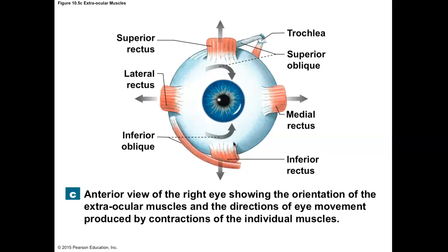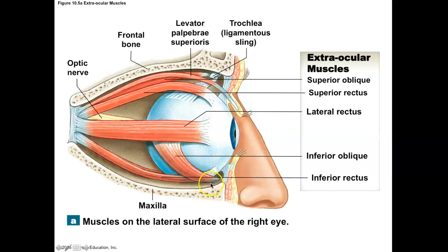The last two muscles are the superior oblique and inferior oblique. These are muscles that insert onto the eye at an angle — oblique refers to that angle. The superior oblique comes from the posterior eye, and notably, its tendon runs through a structure called the trochlea, which is a sling that allows the tendon to hit and insert on the eye at a very acute angle. The inferior oblique also inserts onto the eye obliquely. The superior oblique comes up, does a turn in the trochlea, and inserts onto the sclera of the eye.